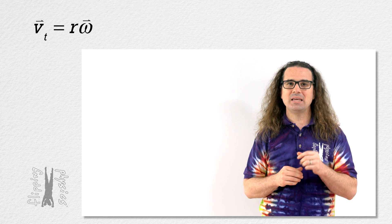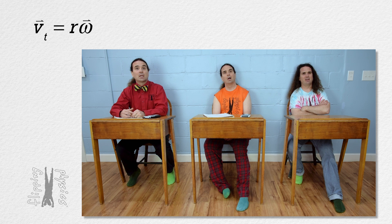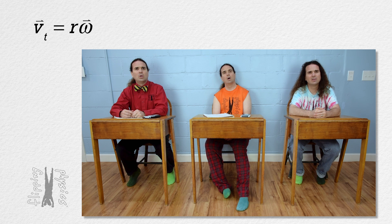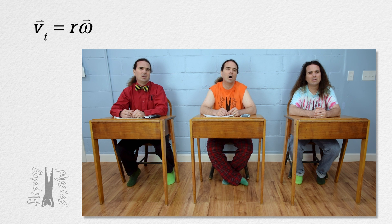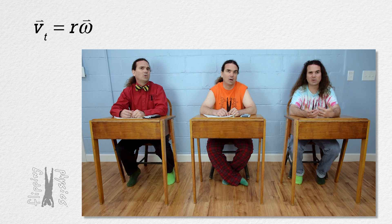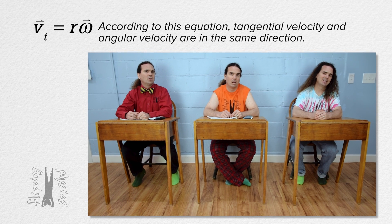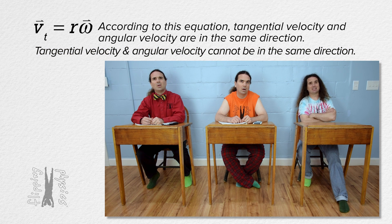Bo, what would it mean if tangential velocity equals radius times angular velocity? I don't get it. That's how Bobby read that equation. Is that not correct? What I'm getting at is what would this equation imply about the directions of tangential velocity and angular velocity? Well, the equation tangential velocity equals radius times angular velocity means, because radius is a scalar, tangential velocity and angular velocity would be in the same direction. Okay, I get it.